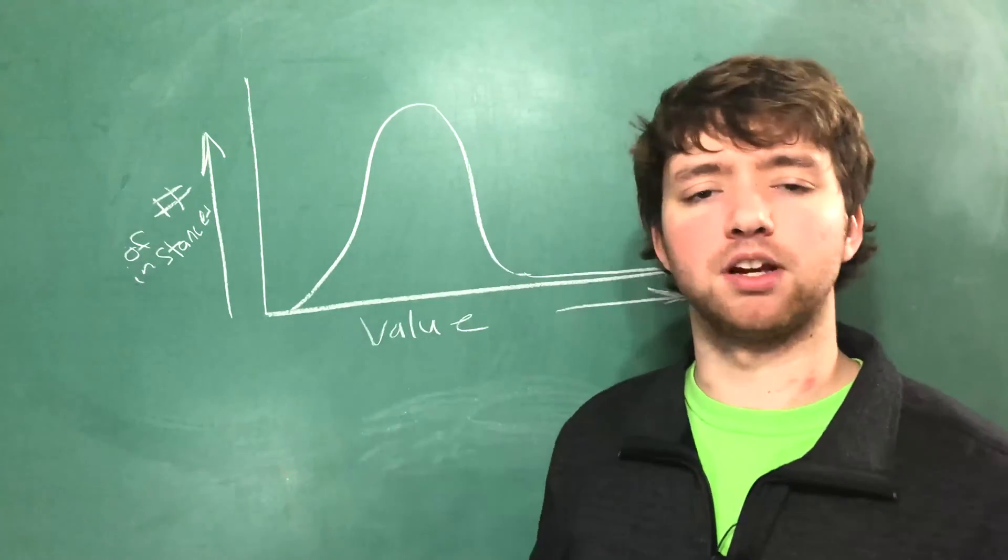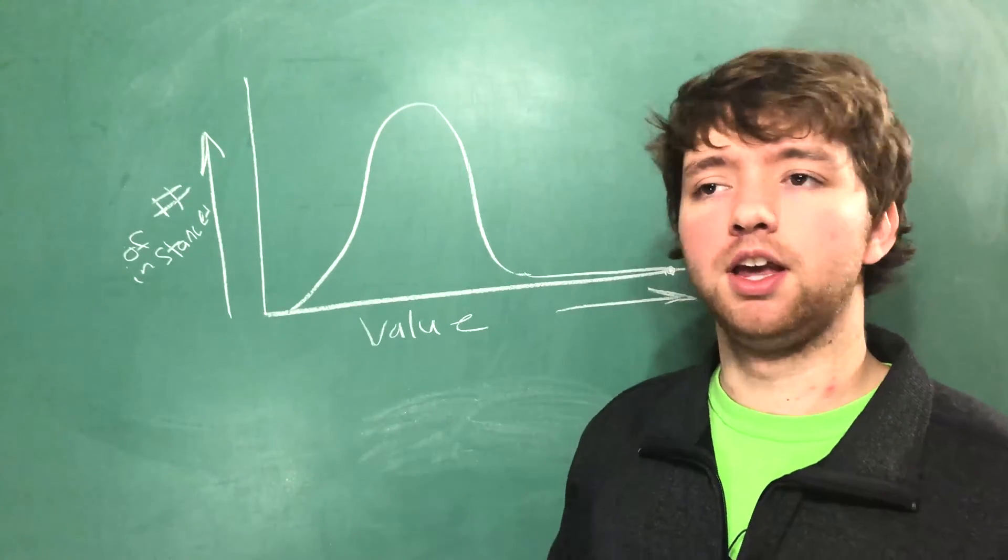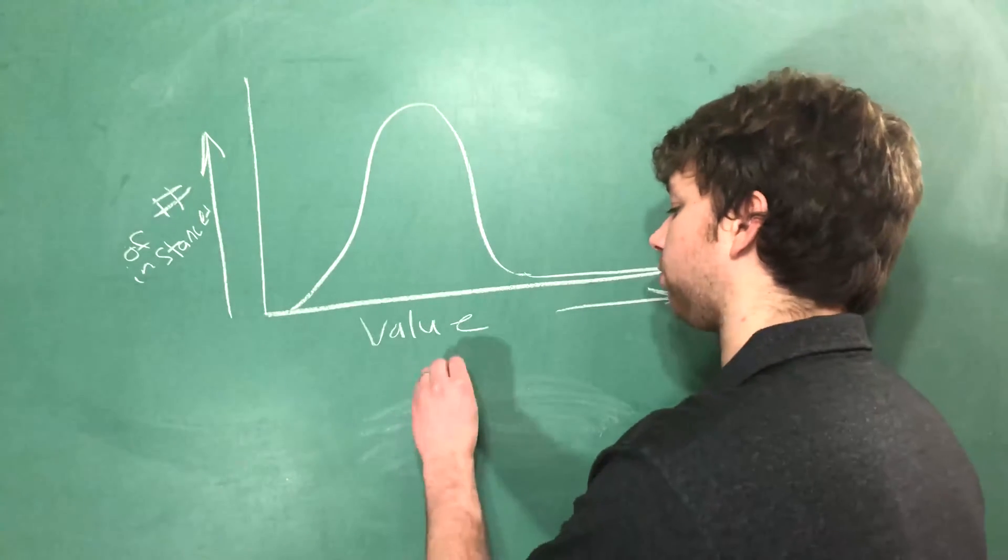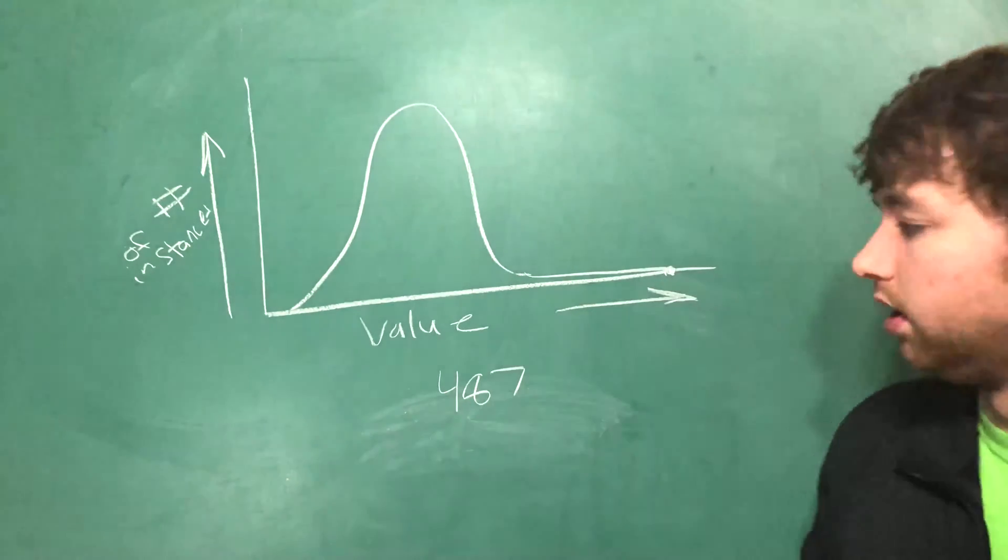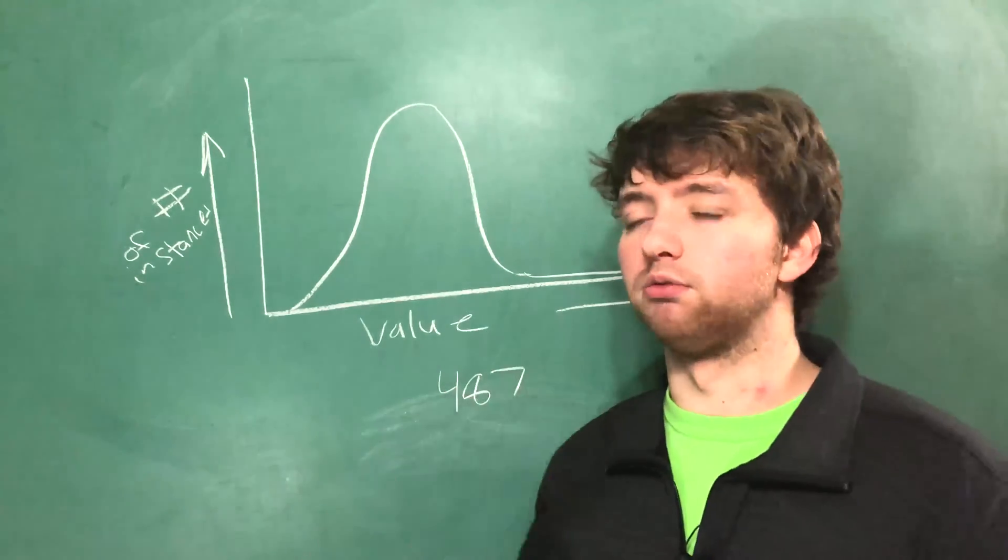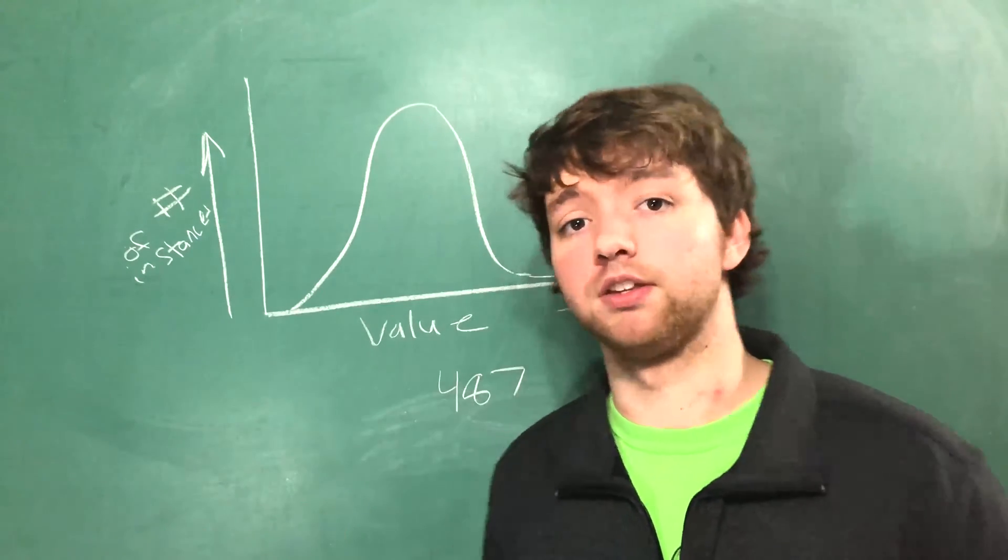The outliers are going to completely mess up your measures of central tendency because if you have an age like 487 well if you took the range for example that's going to make the range seem much much higher than it really truly is.